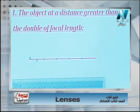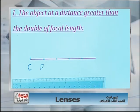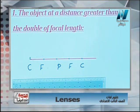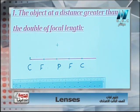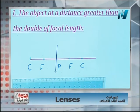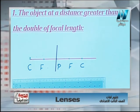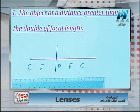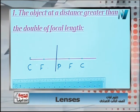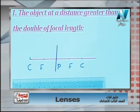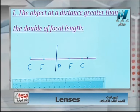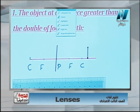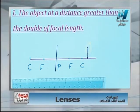We label the points C, F, P, F, and C on the principal axis, then use the ruler to draw an imaginary line representing the lens. We place the object at a distance greater than the double focal length, beyond the center of curvature. The object can be drawn from the right or left side as preferred.